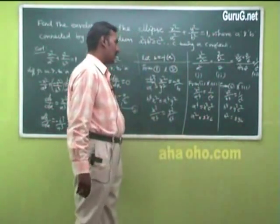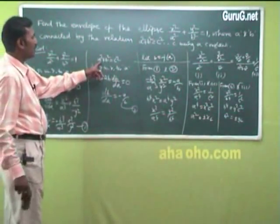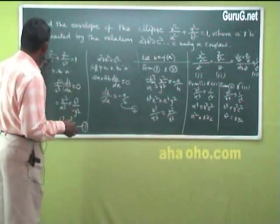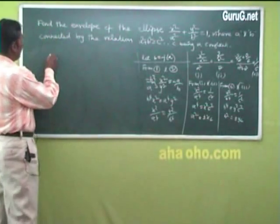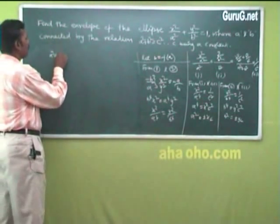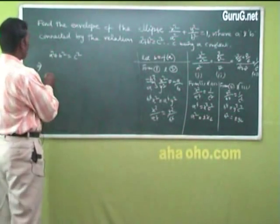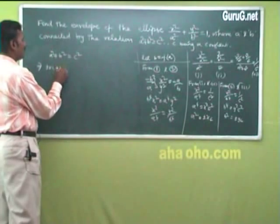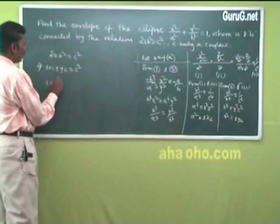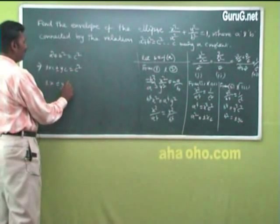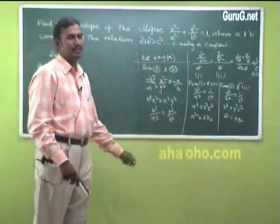Substitute into a² + b² = c²: (±xc) + (±yc) = c². Dividing by c: ±x ± y = c. This is the equation of the envelope of the ellipse.